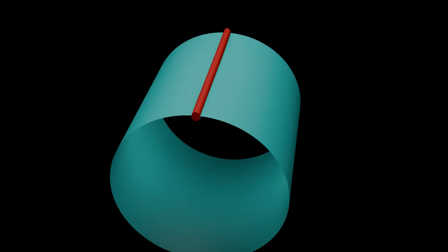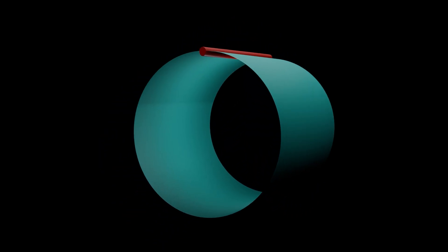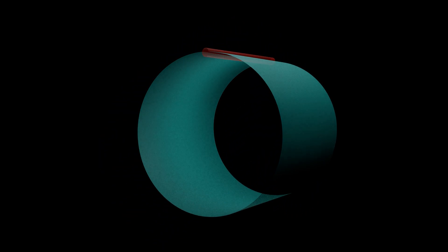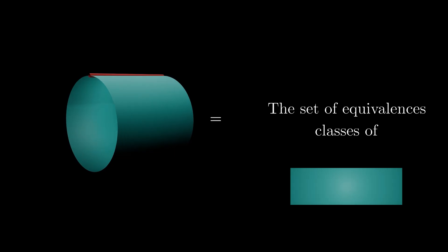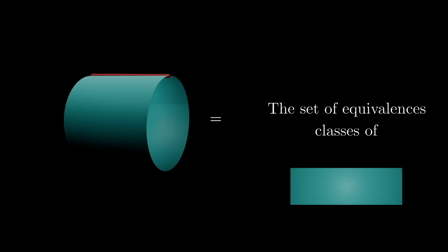This equivalence class glues the two edges of the strip together to form a hollow cylinder. To give you a bit more detail, the hollow cylinder is described by the set of all equivalence classes on the original strip, just like with our previous example of the line.